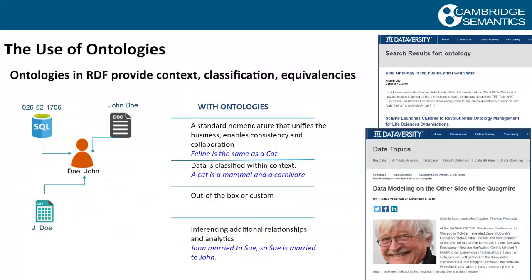With RDF stores there's a whole concept of using ontologies to provide extra context, classification, and equivalencies. I can leverage existing ontologies or build my own to come up with classifications. For example, I can call a cat a feline or cat, and also know that a cat is a mammal and a carnivore — and use that in analytics. If I want to see all carnivores in my database, cat will come up as part of that.